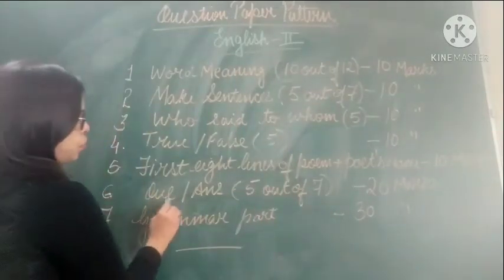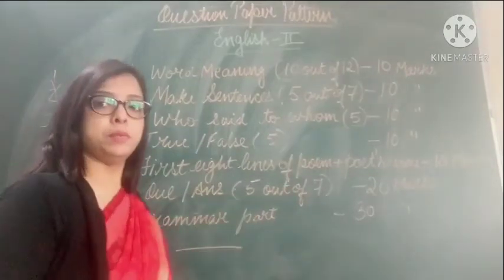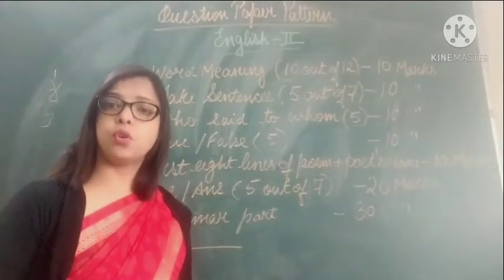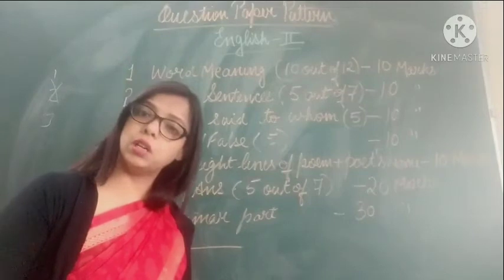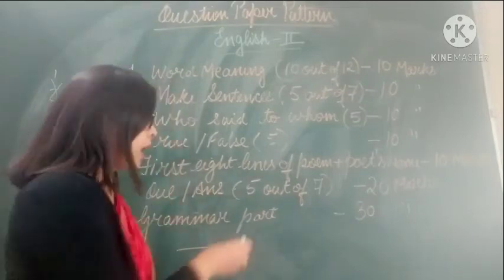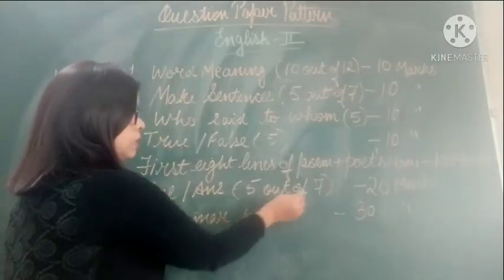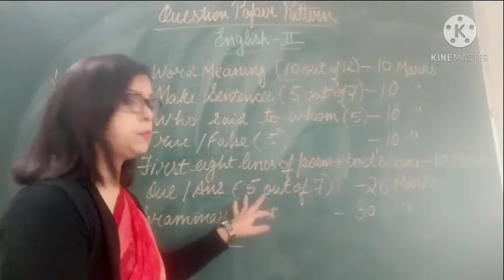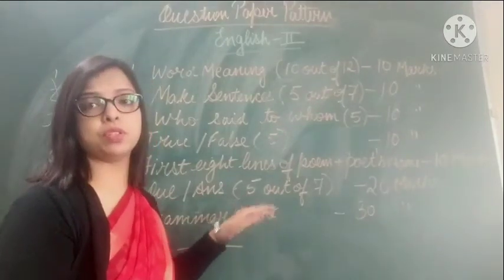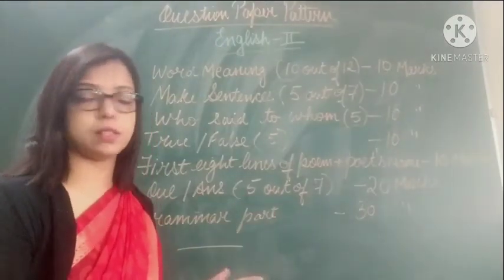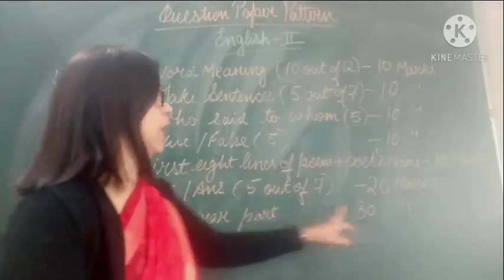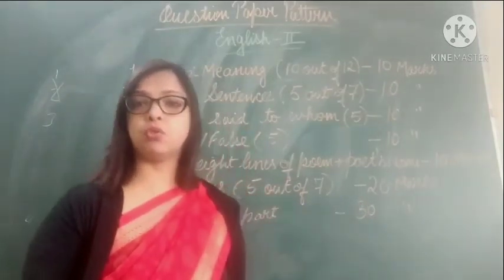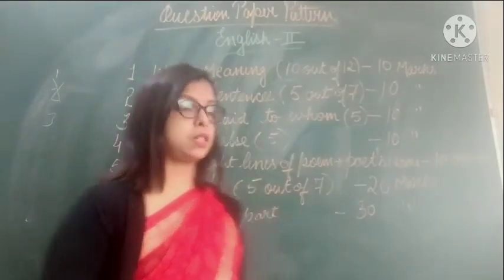Then question answers — the question answers which you have in your book and written in your copy. You have to learn all the question answers. Any 7 will come, out of which you have to attempt 5 questions. That will be of 20 marks, meaning each question will be of 4 marks.